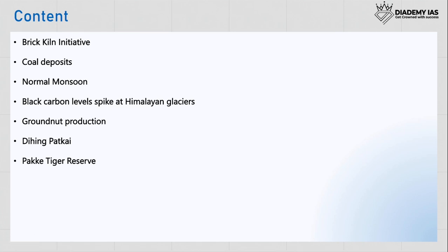The content for this discussion: first we will look at the Brickland Initiative — what it is all about. Next we will talk about coal deposits. After that we will see what is 'normal monsoon.' We will talk about black carbon level spike at the Malin Glacier, groundnut production, the Dihang Patakai National Park, and the Pakke Tiger Reserve.